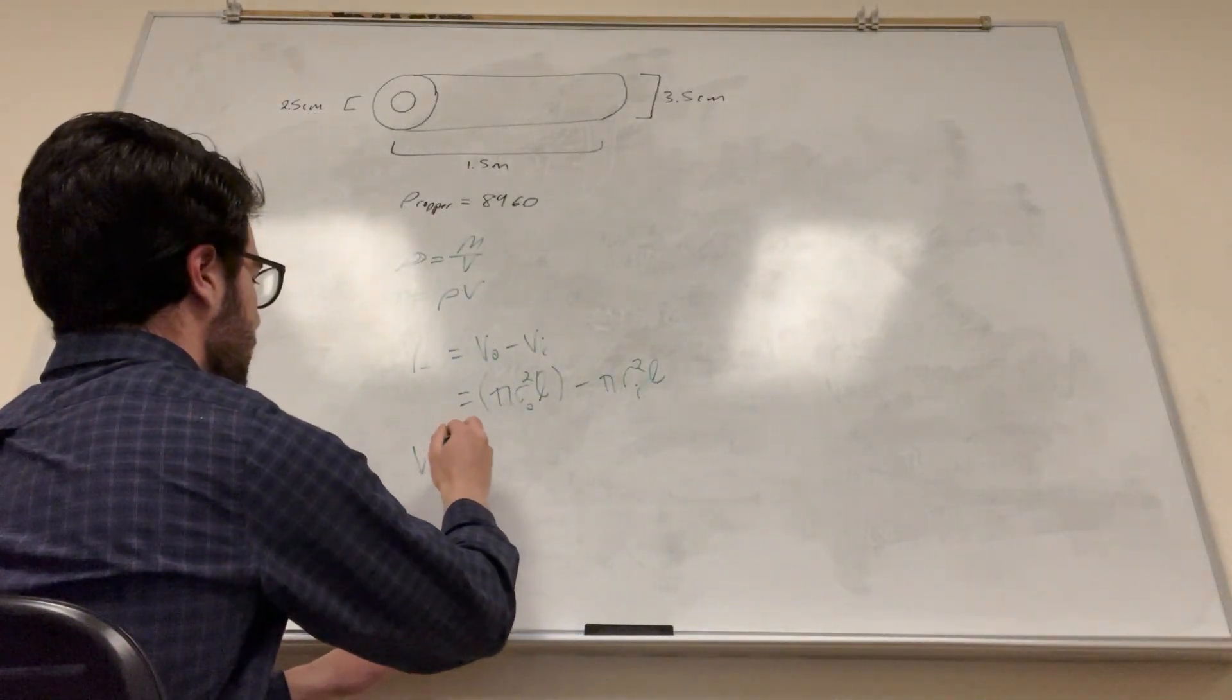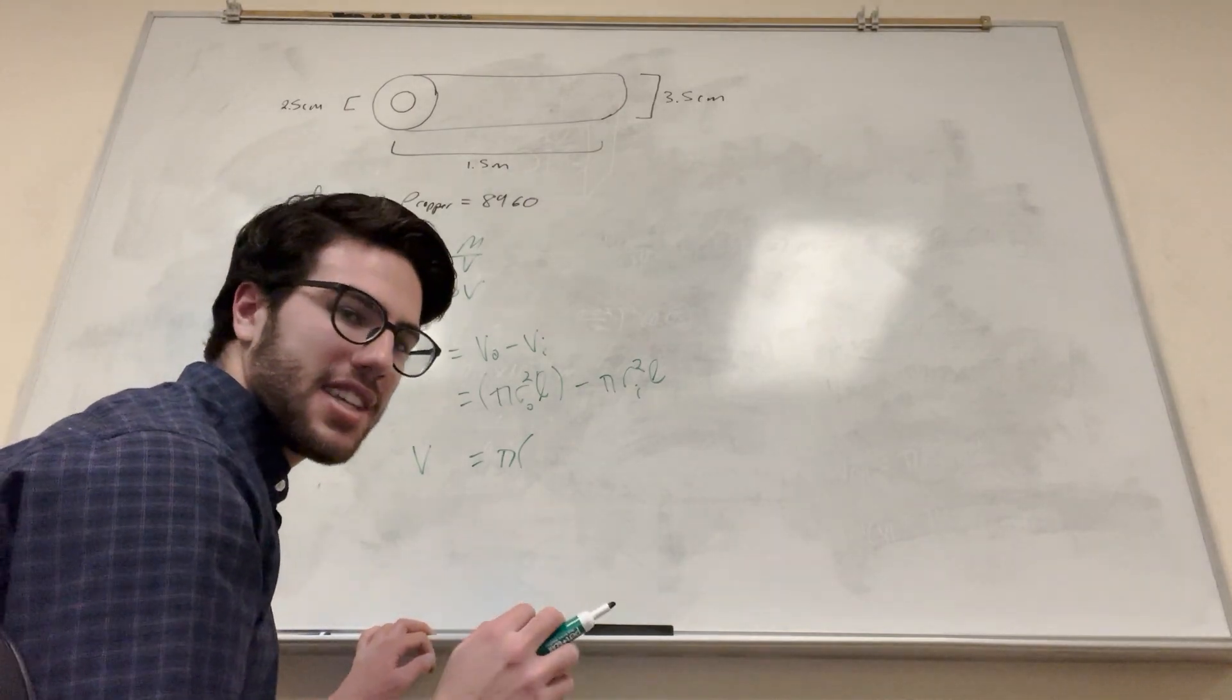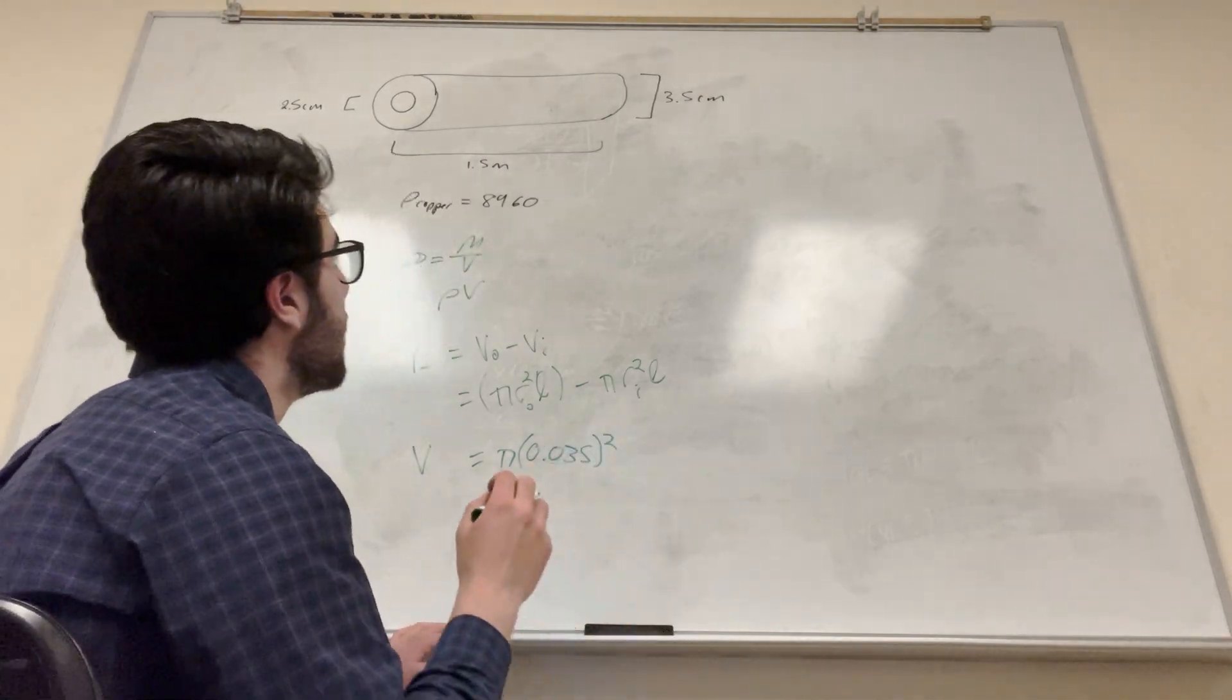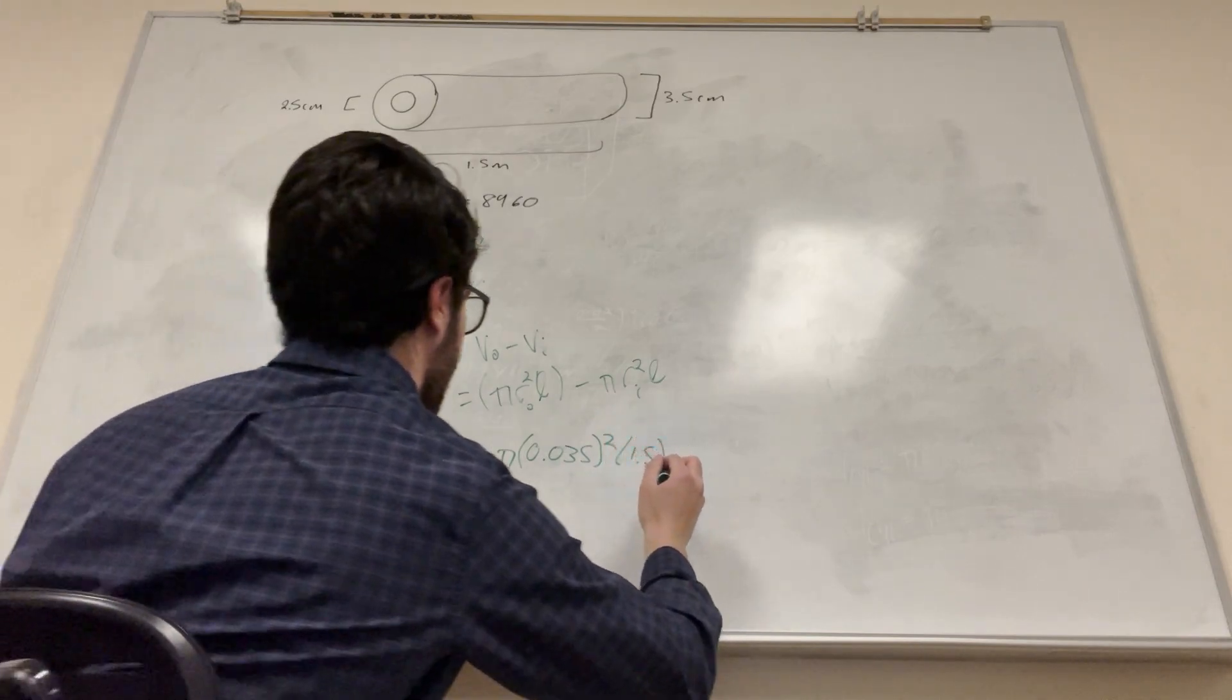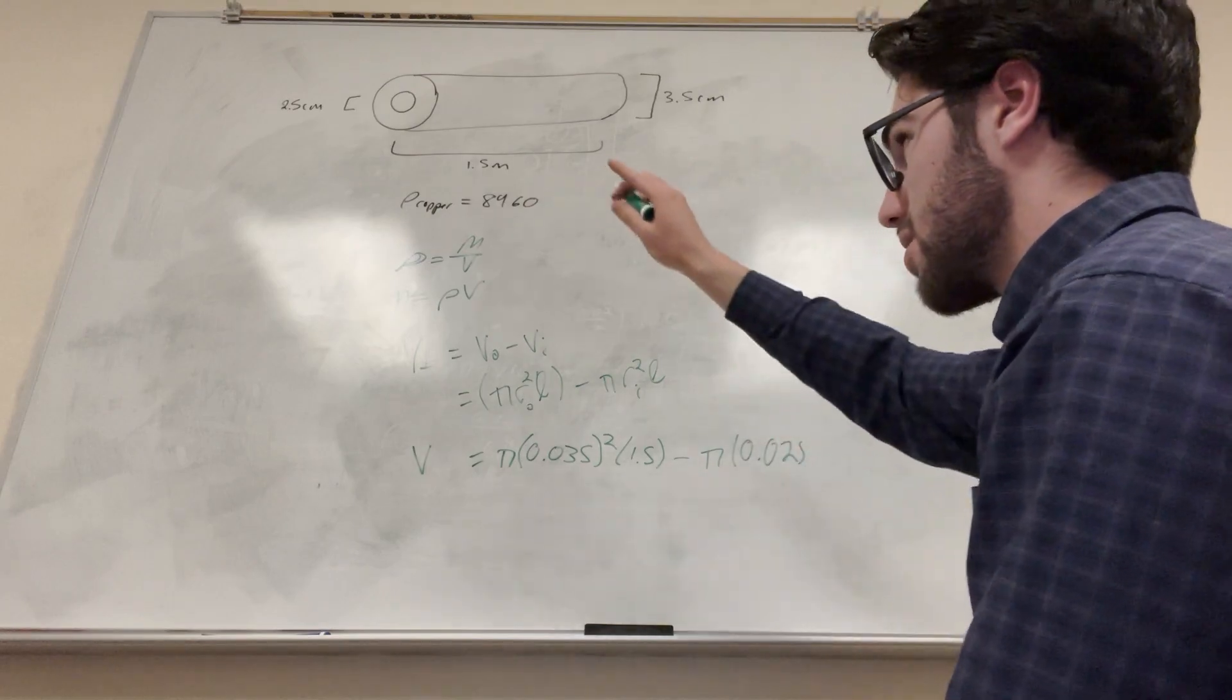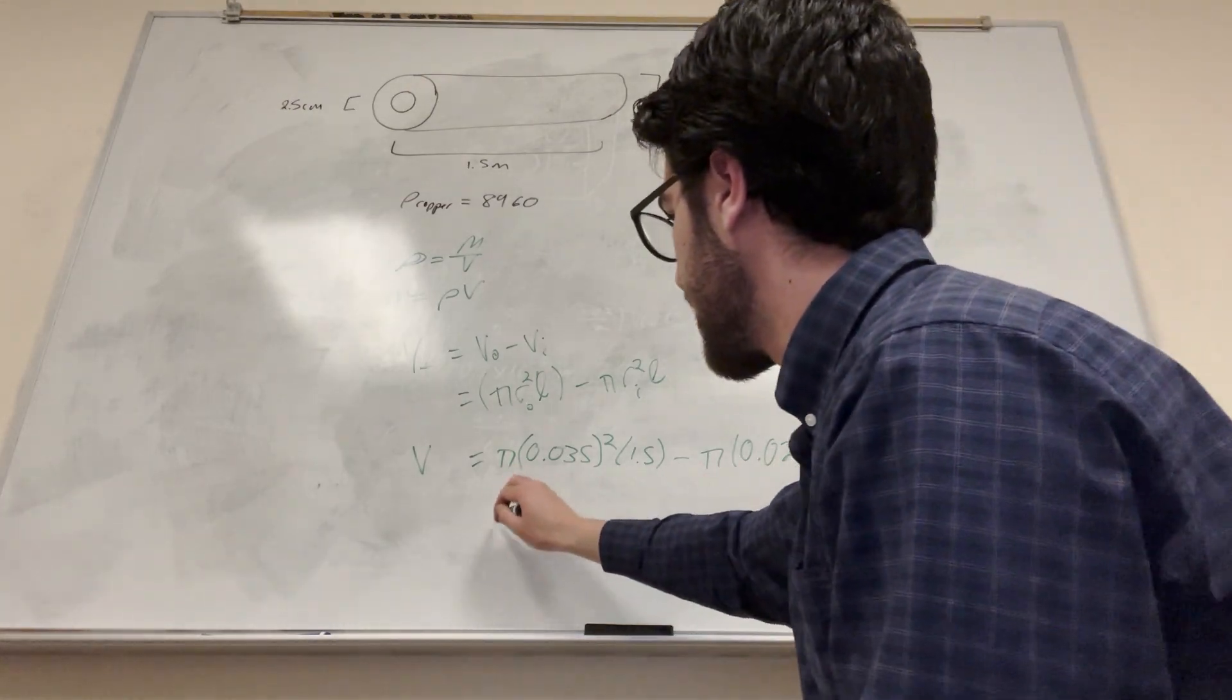So volume is equal to pi. The radius of the outer is 0.35 centimeters, 3.5 centimeters which is going to be 0.035 meters, we need it in meters not centimeters. And then multiply by the length which is 1.5, and then we're going to subtract the inner side. So it's going to be pi times 0.025 because it's only 2.5 centimeters, square this number, multiplied by 1.5, and you're going to get that this number...